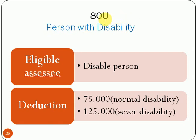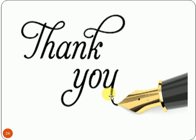The last deduction is Section 80U, for persons who are disabled. If a person is disabled, then he can claim the deduction under Section 80U. The amount of that deduction is limited to Rs. 75,000 for normal disability, or in case of severe disability, the person can claim up to Rs. 1,25,000 under Section 80U. So friends, these are the deductions under Section 80C to 80U. Thanks for listening.